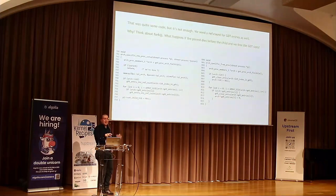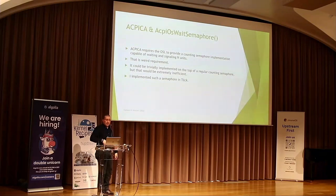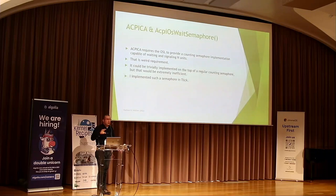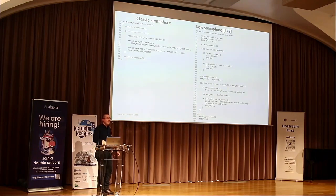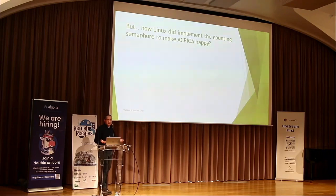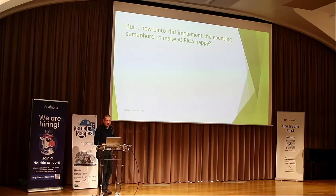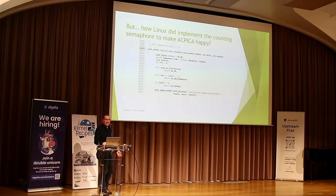I had to implement the whole separate GDT area and then additional stuff for ref counting of GDT entries. Another case: I had to implement an ACPiCA OS wait semaphore, and I didn't want to cheat because I don't know what ACPI does. It wanted an implementation of a semaphore that supports wait and signal with N units — not just one like traditional semaphores. I spent some time implementing this fancy semaphore. Then out of curiosity I checked how Linux handles this. Well — it didn't. It just sometimes works.